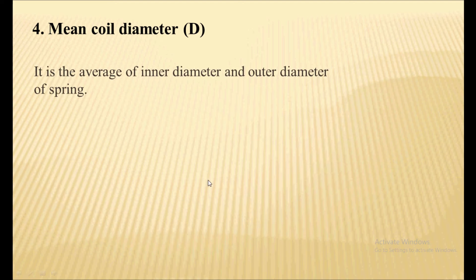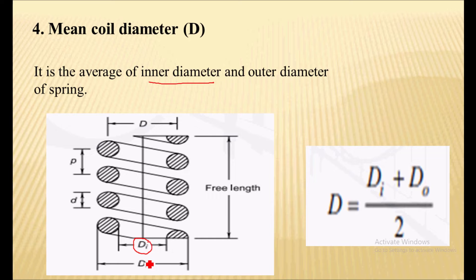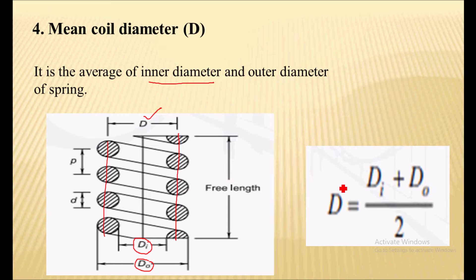The next term is the mean coil diameter. It is the average of the inner diameter and outer diameter of a spring. Mean coil diameter is also defined as the center-to-center distance, and it equals (inner diameter plus outer diameter) divided by 2.